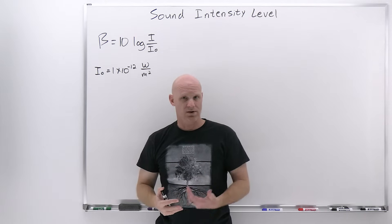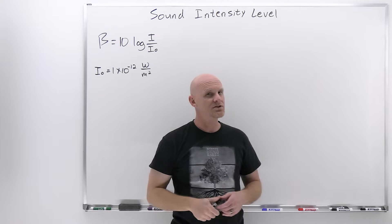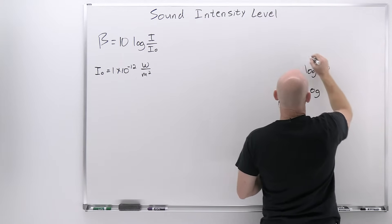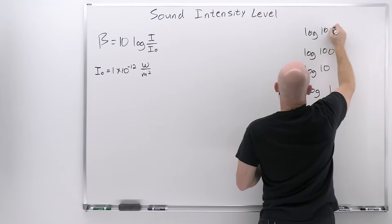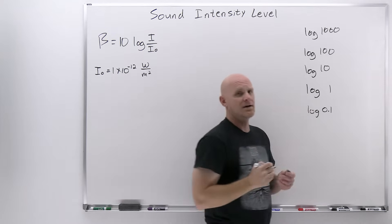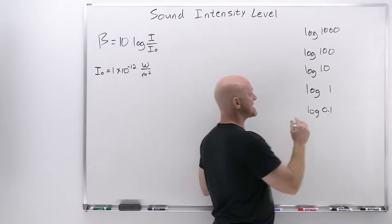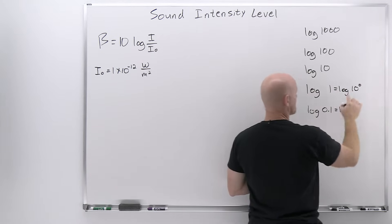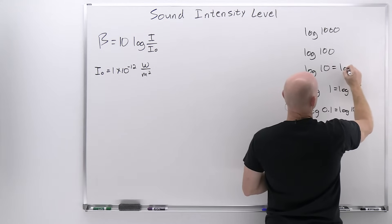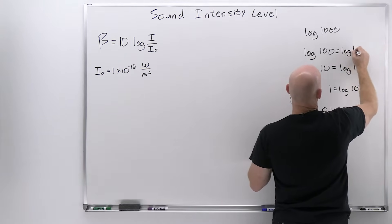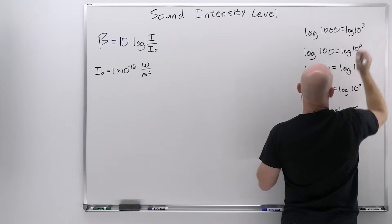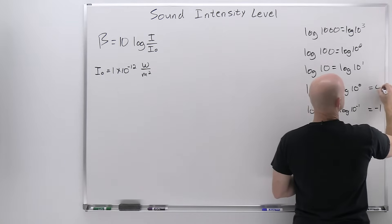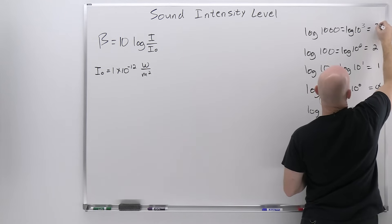I want to quickly remind you of what logs do, because when we're comparing things on a logarithmic scale, things aren't always what they initially might seem. So if we take the log of 1, the log of 10, the log of 100, the log of 1000, and going the other direction, the log of 0.1 — I've chosen these numbers specifically because they're all perfect powers of 10. So 0.1 is 10 to the negative 1, 1 is 10 to the 0, 10 is 10 to the 1, 100 is 10 squared, and 1000 is 10 cubed. When you take the log, you get the power: log of 10⁻¹ is −1, log of 10⁰ is 0, log of 10¹ is 1, log of 10² is 2, and log of 10³ is 3.